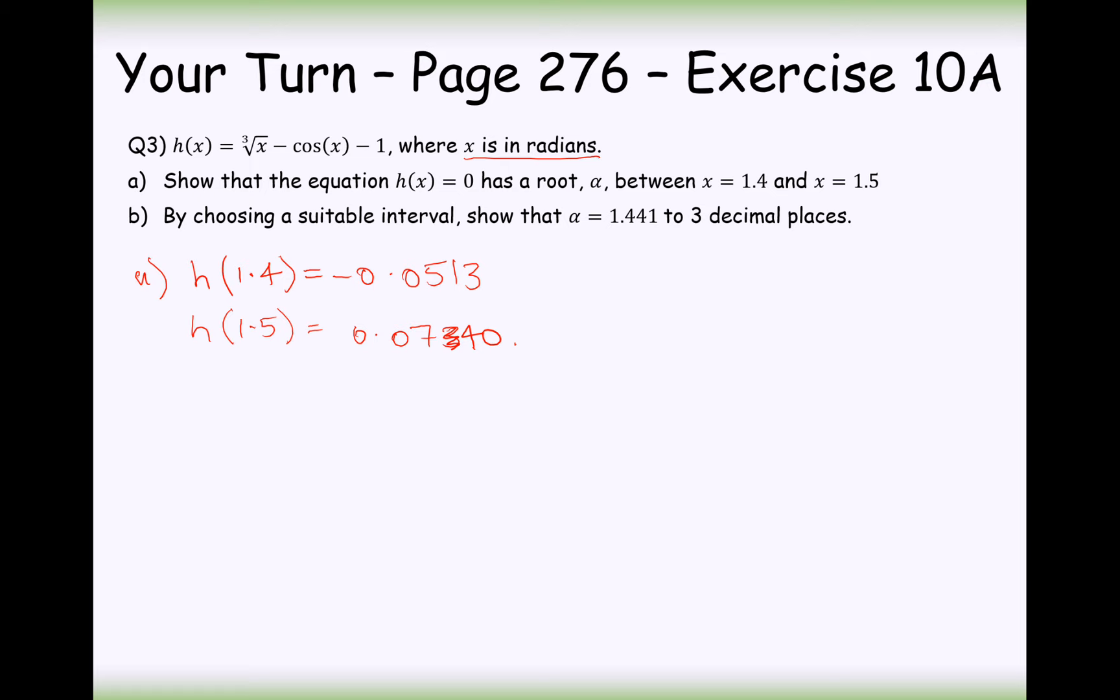Now we need to write our conclusions. So as there is a change of sign in the interval 1.4 to 1.5 and h of x is continuous, there must be a root in the interval from 1.4 to 1.5. And there we are, it's a little bit of a pain to write that out, but it gets you the mark. You don't really have to do much brain work for it, so it's not too bad, really.